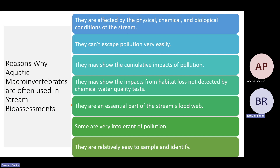There are about seven reasons why aquatic macroinvertebrates are used in stream bioassessment. First, they're affected by the physical, chemical, and biological conditions of the stream. They're small, especially in their larval stage, and they can't escape pollution very easily. Third, they can show the cumulative impacts of pollution. Fourth, they may show the impacts of habitat loss that wouldn't be detected by chemical water quality tests — like dissolved oxygen measurement, pH, or conductivity.